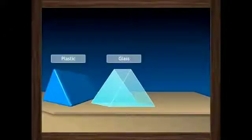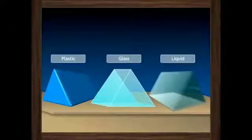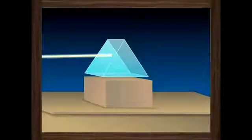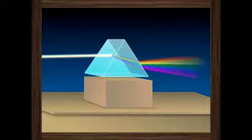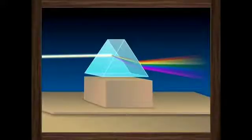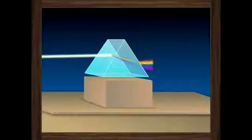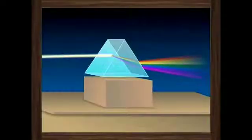When a ray of light passes through a prism, it refracts twice — once when it enters the prism, and a second time when it comes out of the prism. Let us explore this with an activity.